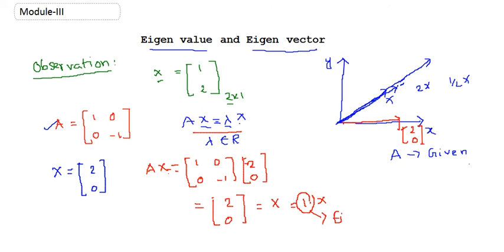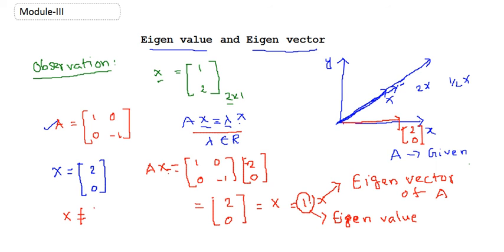This scalar λ = 1 is called the eigenvalue of the matrix A, and the corresponding non-zero vector x = (2, 0) is called the eigenvector of matrix A. Note that x must not equal the zero vector. In the next video I will talk about three-dimensional vectors, and after that I will discuss the procedure or method for finding eigenvalues and eigenvectors of a given matrix. Thank you for watching, and I hope you will come back in my next lecture.